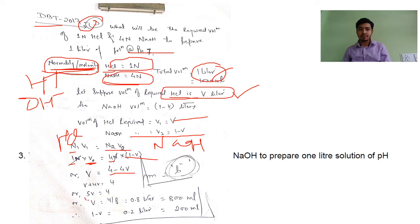So 1 times V equals 4 times (1 minus V). This gives V equals 4 minus 4V. When you sum up, 5V equals 4, so volume V is 4 by 5, which equals 0.8 liter.